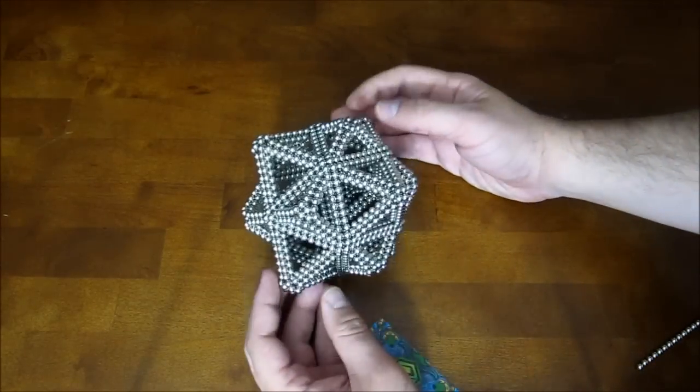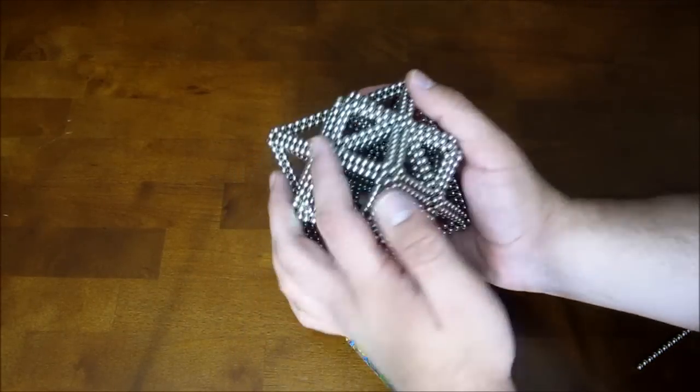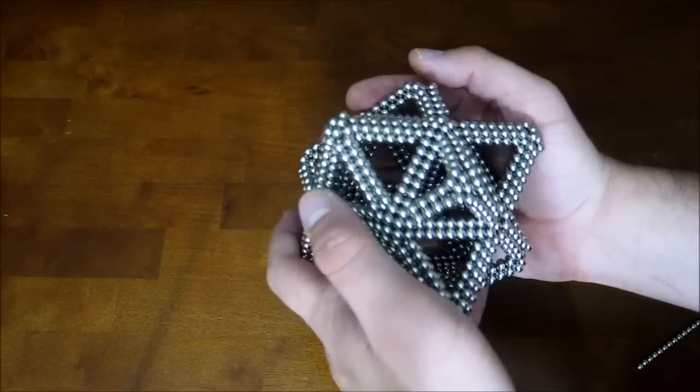And there you go. This is the fully accumulated cube octahedron, but now you've seen how to build all three versions.